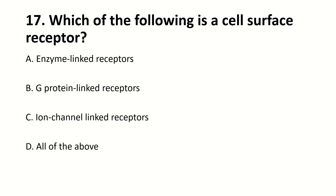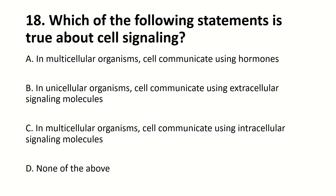Which of the following is a cell surface receptor? Right answer is D — all of the above. Right answer is D — all of the above.